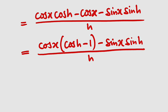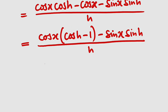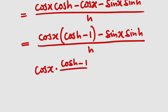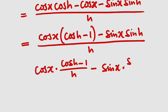So we have cosine x outside, and inside we have cosine h minus 1. Then minus sine x times sine h, the whole of this divided by h. Now I want to split the fractions. I'm going to distribute the denominator upon the two terms. So we have cosine x multiplied by (cosine h minus 1) divided by h, then minus sine x multiplied by sine h divided by h.